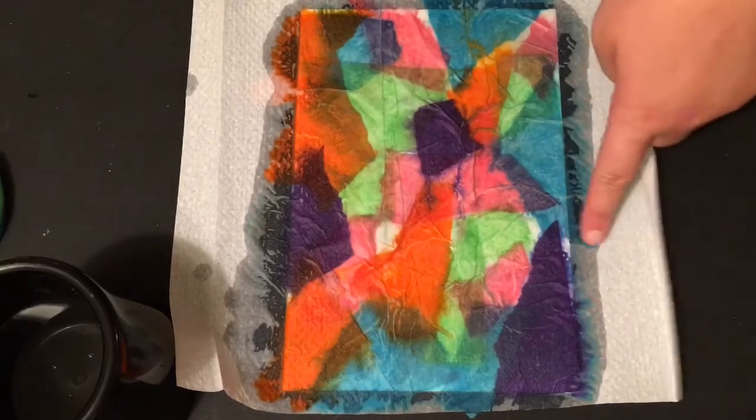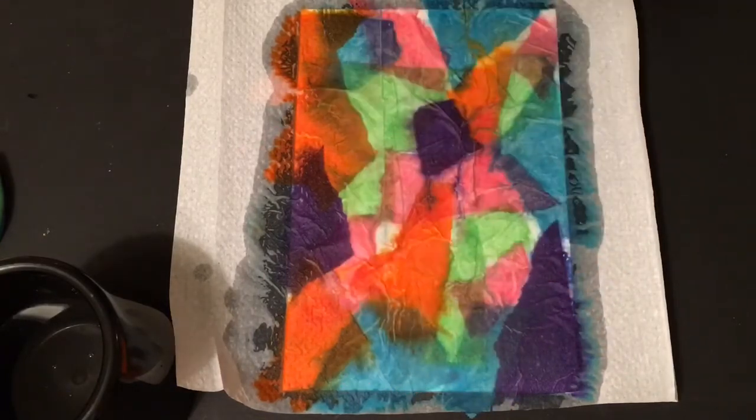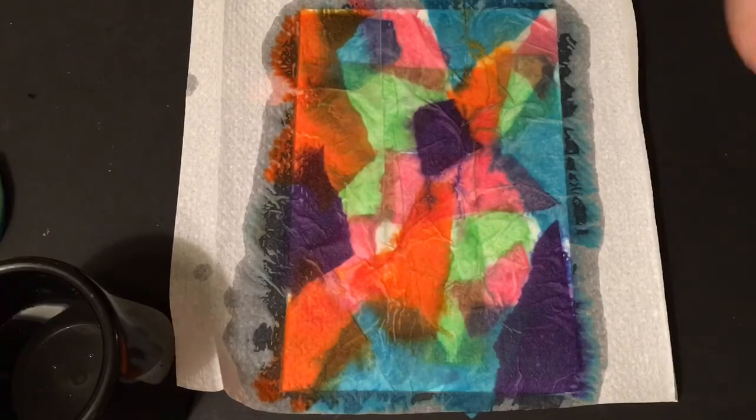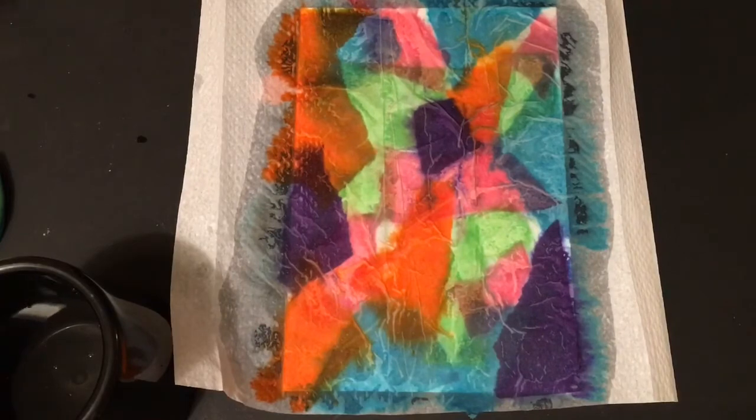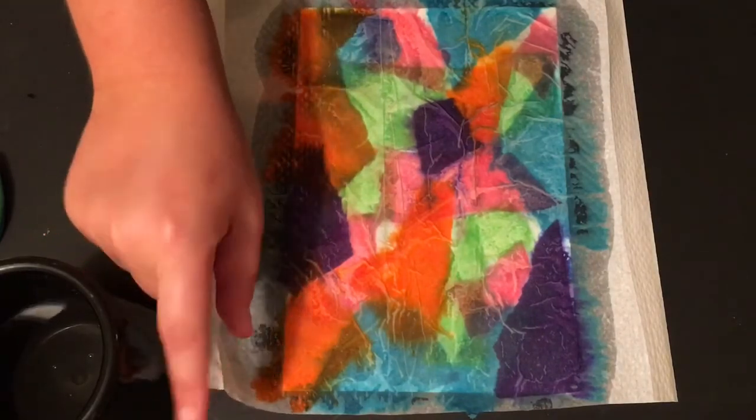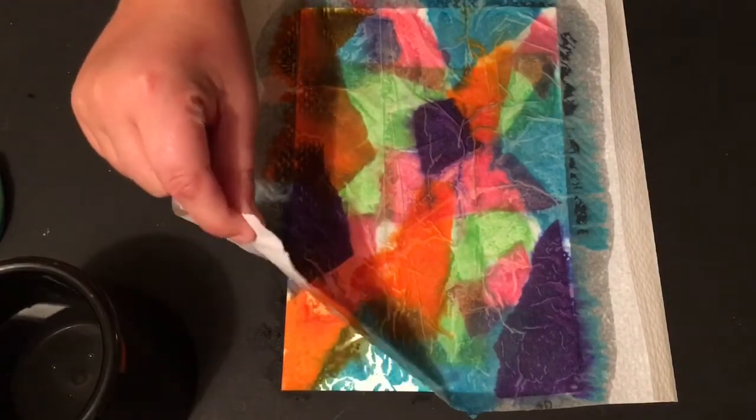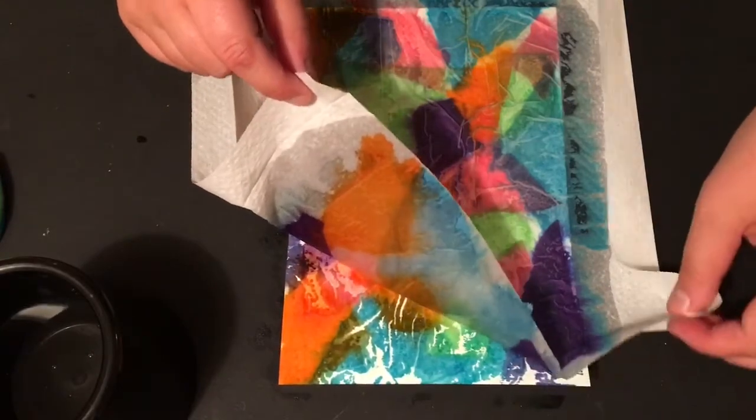Now you can see that the color is starting to bleed a little bit. It is right on the edges over there. That is exactly what you want. So you want to be very careful now with your artwork. You are going to very slowly take the edge of the paper towel and start peeling it off the paper.